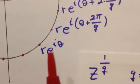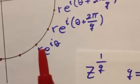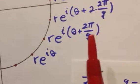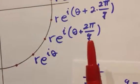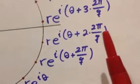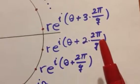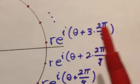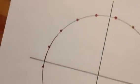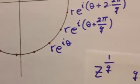The next root would have an argument 2 pi over Q more than the previous one. So by adding 2 pi over Q to each argument, we get the next and the next and the next, so then that will give us all the Q roots of z.